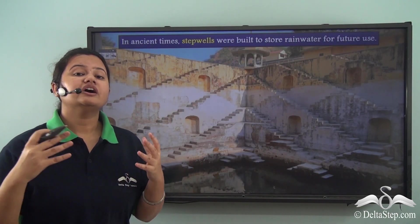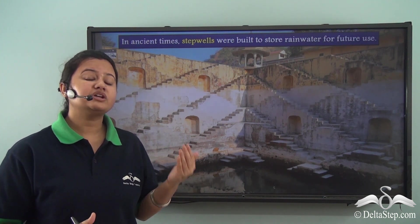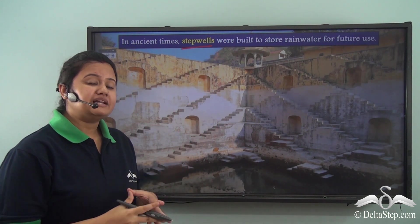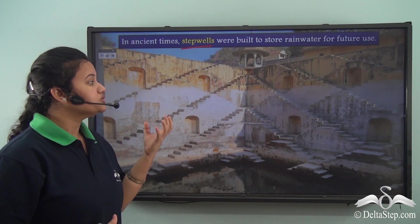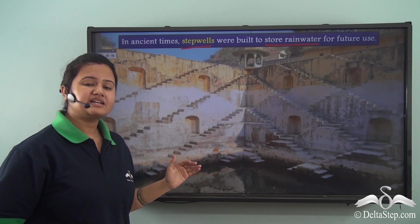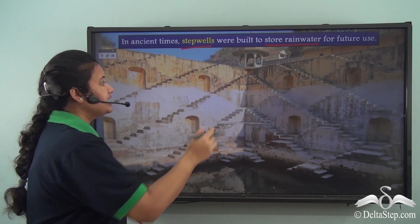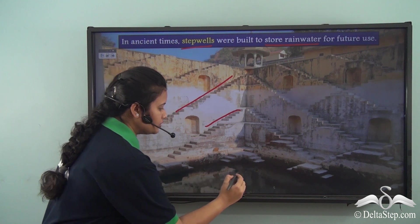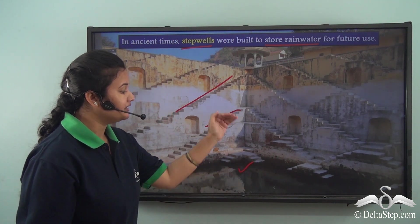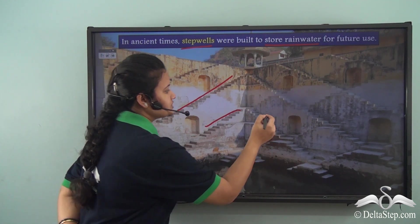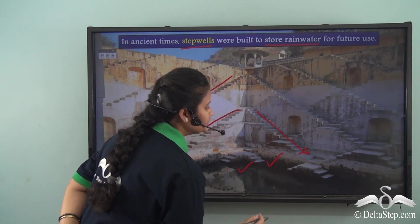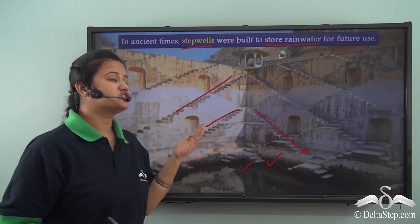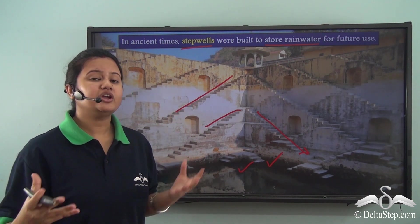Rainwater harvesting is not a new concept — it has been in use since prehistoric times. Step wells were built in ancient times by rulers to store rainwater. A step well is a large tank with steps or stairs constructed along the walls, so that people can fetch water even when the water level falls drastically. People simply go down the stairs to collect rainwater, making step well construction a primitive way of conserving rainwater.